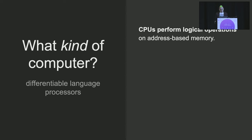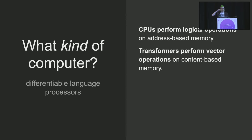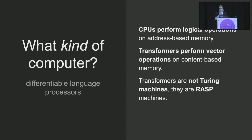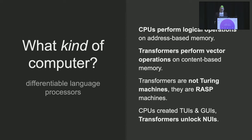The computers that we have now are based off of central processing units that perform logical operations on address-based memory. Transformers are very different — they perform vector-based operations on content-based memory. This also means that transformers are not Turing machines; they're a thing called a RASP machine. And CPUs created terminal user interfaces and graphical user interfaces, while these transformer-based models unlock perhaps natural user interfaces, a holy grail of human-computer interaction.